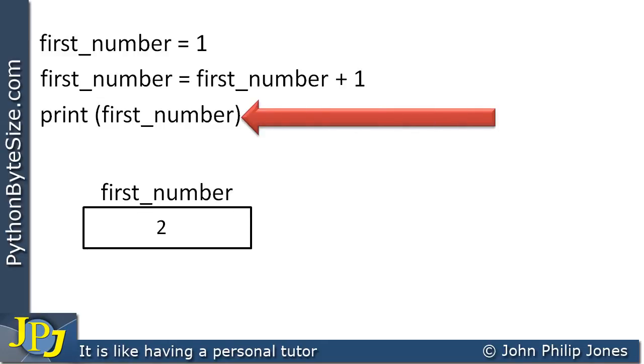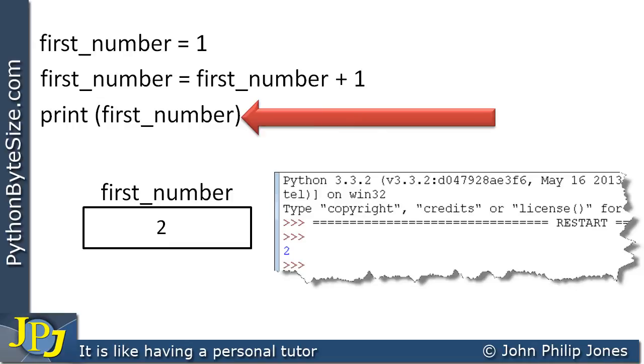Then we'll come on to this particular program statement here, and what this will do is simply display what's stored in the variable first_number. So we'll see this appearing, and we can see that two will appear in this position.